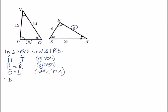Therefore, triangle NPO is similar—the symbol for similarity is three vertical lines—similar to triangle TRS, because they are equi-angular triangles.